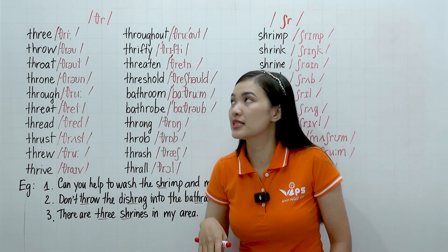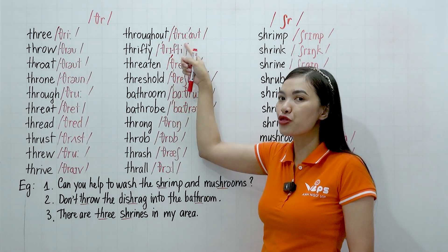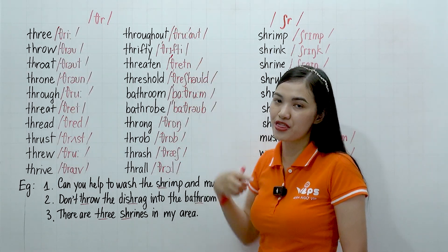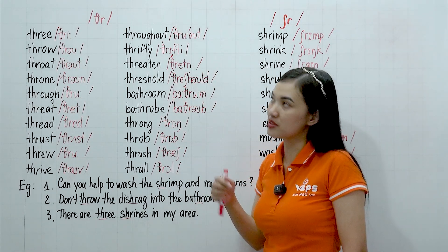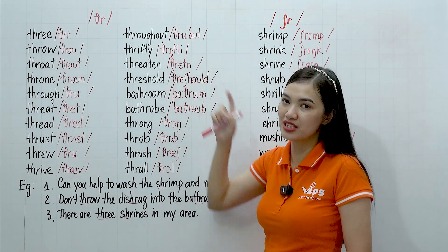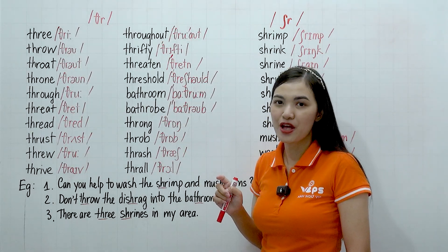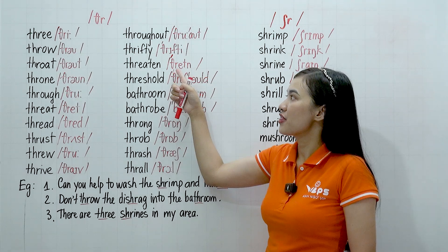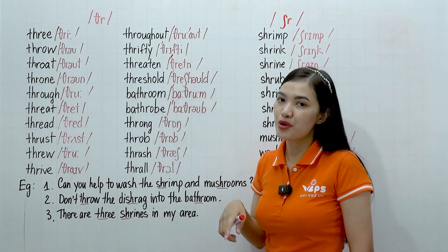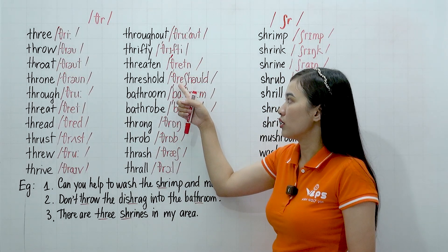Second column please. Throughout, throughout — we stress 'out.' Throughout, throughout, just like 'during.' And this one — thrifty, thrifty, thrifty. This one — threaten, threaten, which is the verb form of 'threat.'